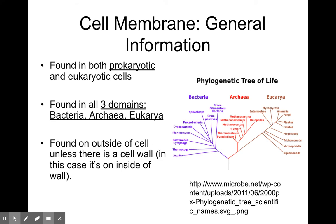Cell membranes are found on the outside of a cell, unless there's a cell wall. If there's a cell wall, then the membrane is inside that cell wall. Bacteria have cell walls, plants have cell walls, and they will have the membrane on the inside.